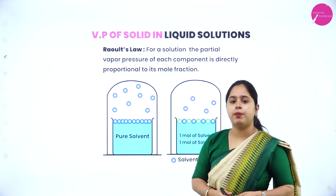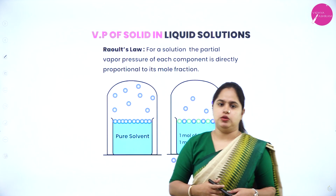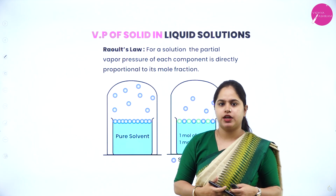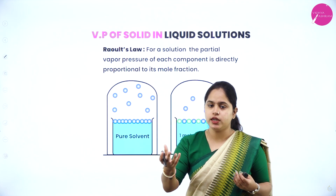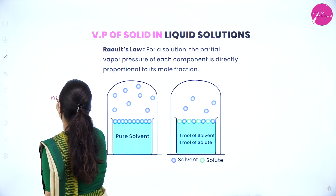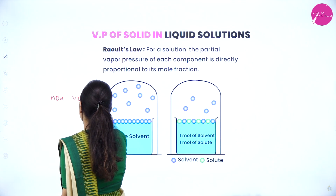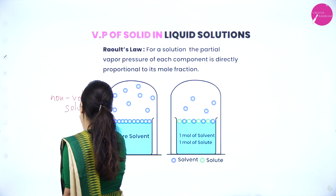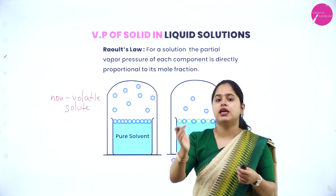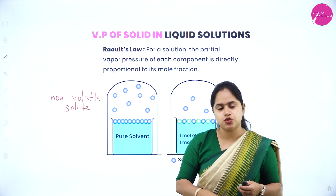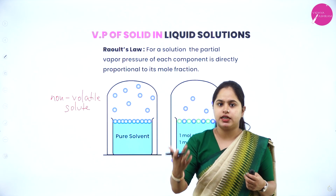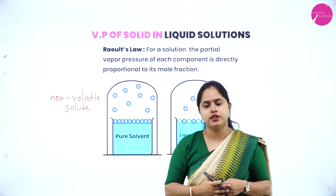Beginning with vapour pressure of solid-liquid solutions: in a solid-liquid solution the solute is a solid and the solvent is a liquid. We are going to study what happens when a non-volatile solute — a solid — is added to a volatile solvent such as water. We will study whether the vapour pressure of the solution decreases, increases, or remains constant.